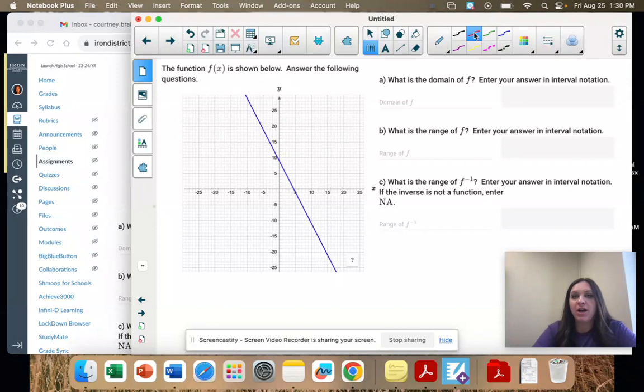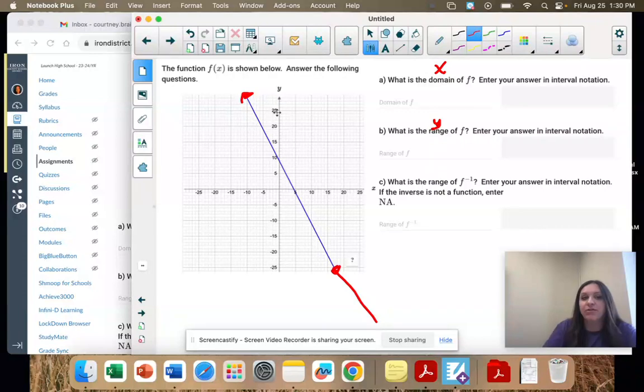So when you look at a graph, remember domain is your possible x values and range is your possible y values. And when a line goes on forever both ways, remember when it gets to the edge of the graph, you assume it keeps going forever and ever, you're going to have positive and negative infinity in your answers.